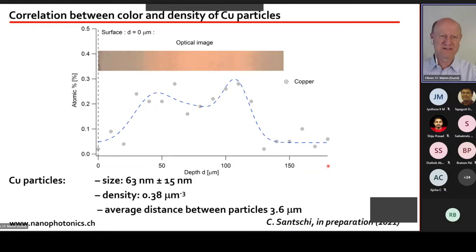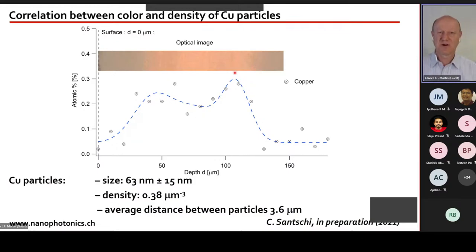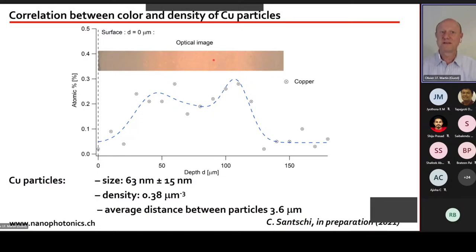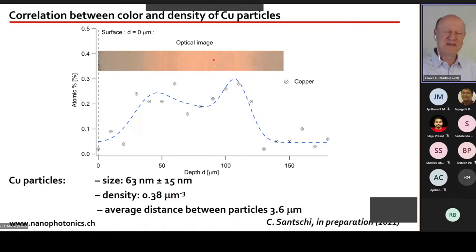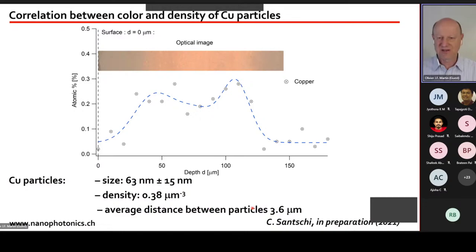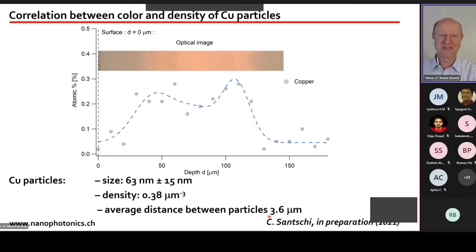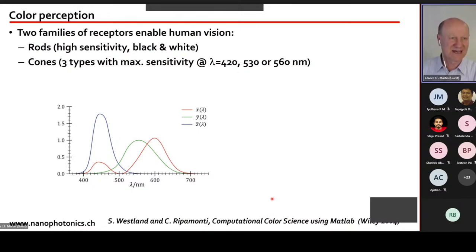Instead of gold, we found copper. The spatial distribution of copper nanoparticles throughout the glass depth correlates strongly with the color of the glass. Copper is a plasmonic metal, though it is rarely used today because of high losses. It seems medieval glassmakers were incorporating copper into the glass — with particles about 60 nm in diameter, separated by about 4 µm.